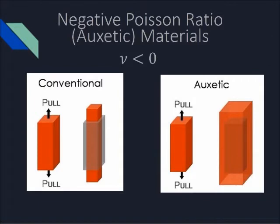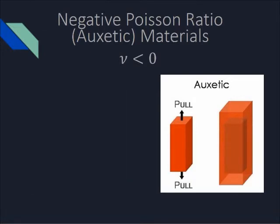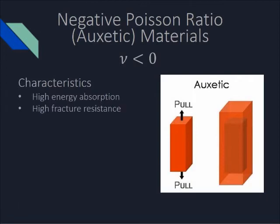Now, on to negative Poisson's ratio materials, otherwise known as auxetic materials. These materials are abnormal in nature. Unlike prior examples, their behavior is opposite to what you've seen in the prior demonstrations. As you can see in the slides of a conventional material, as I pull a material outward, it will compress inward. In an auxetic material, if I were to pull my material outward, it would expand outward as well. Some interesting characteristics about auxetic materials are high energy absorption, high fracture resistance, and low density.